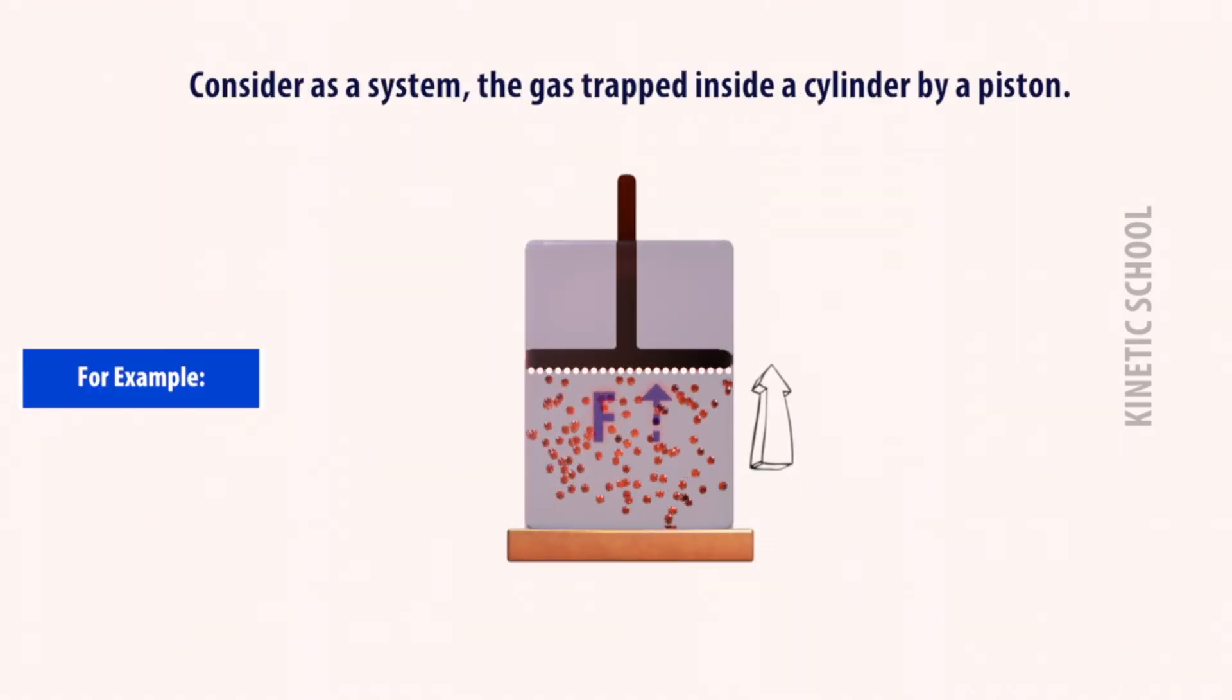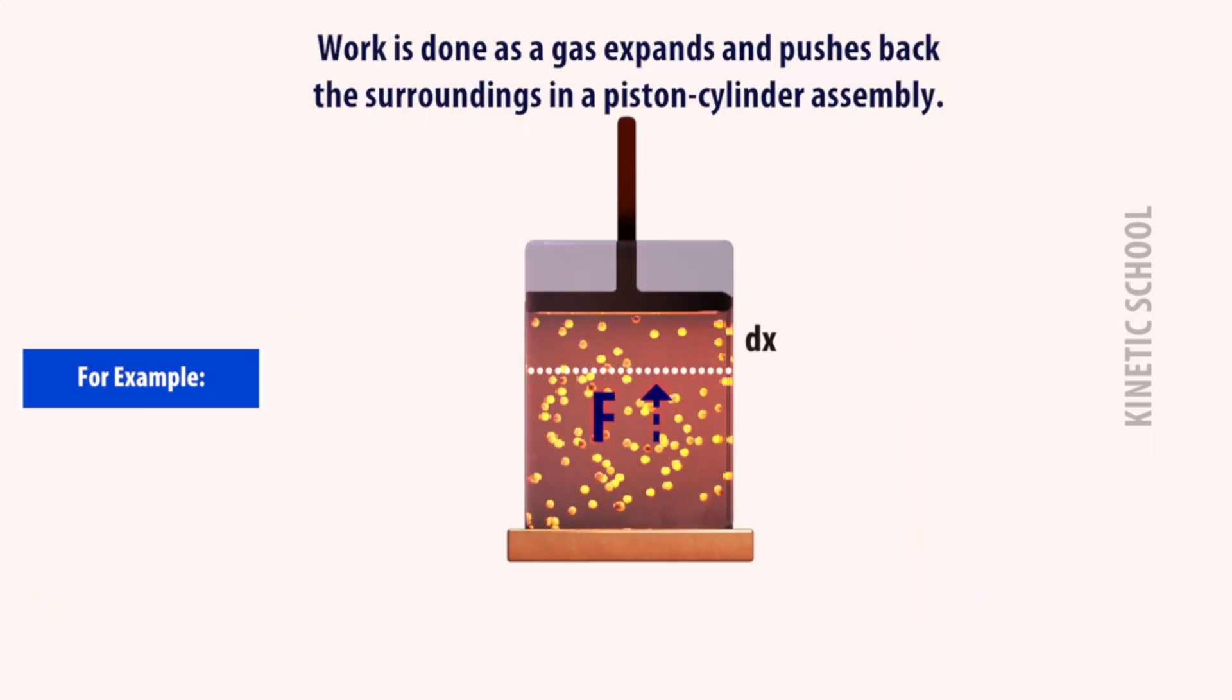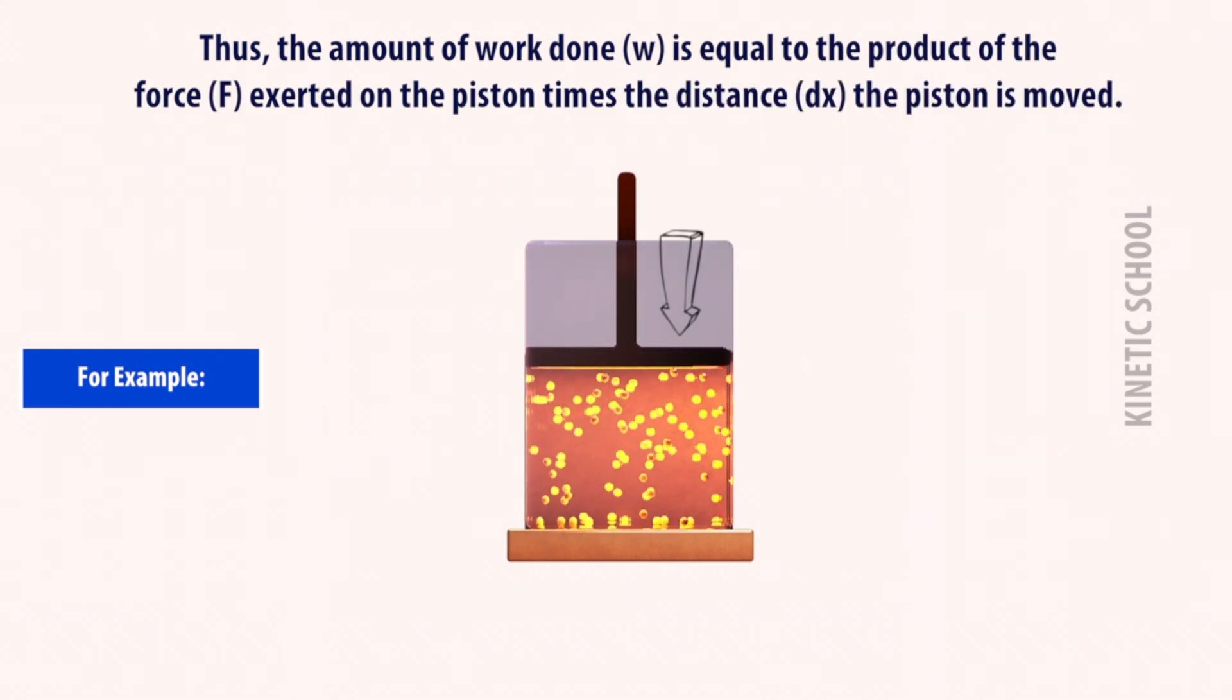For example, consider as a system the gas trapped inside a cylinder by a piston. So work is done as a gas expands and pushes back the surroundings in a piston cylinder assembly. Thus the amount of work done (w) is equal to the product of the force (F) exerted on the piston times the distance (dx) the piston is moved.